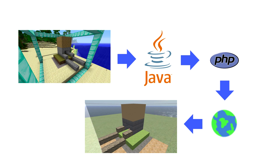If you don't have a setup this nice, you can adapt the instructions to use a single-player Minecraft game and then just manually copy and paste the block data into the OpenSim script. It won't be live, but it will be a lot simpler.